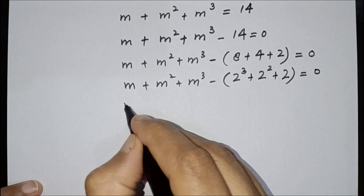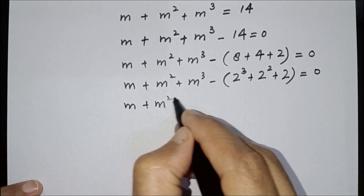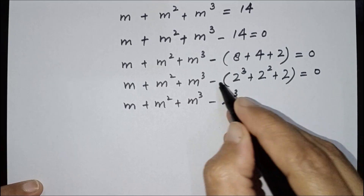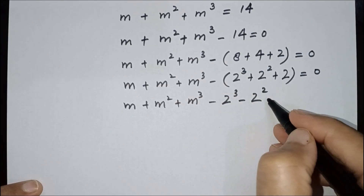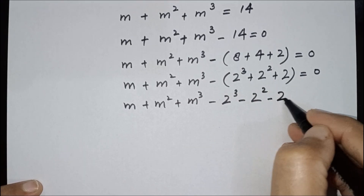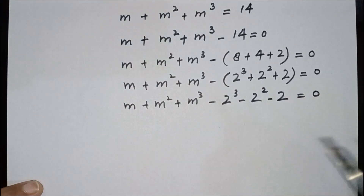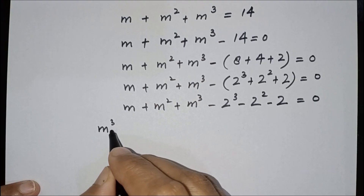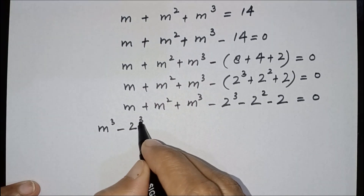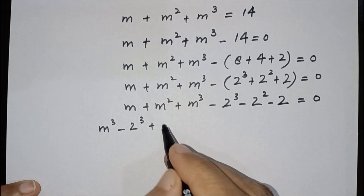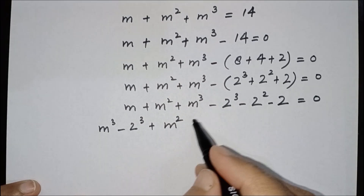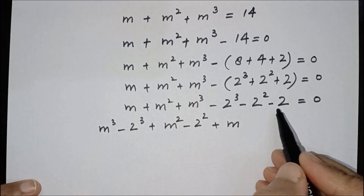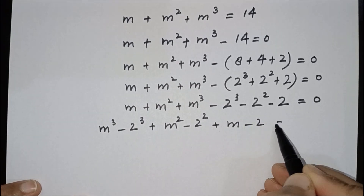In the next step, m plus m squared plus m cubed — I will open the parenthesis: minus 2 cubed is minus 8, minus 2 squared is minus 4, and minus 2. So we write same powers together: m cubed minus 2 cubed, then m squared minus 2 squared, then m minus 2 is equal to 0.